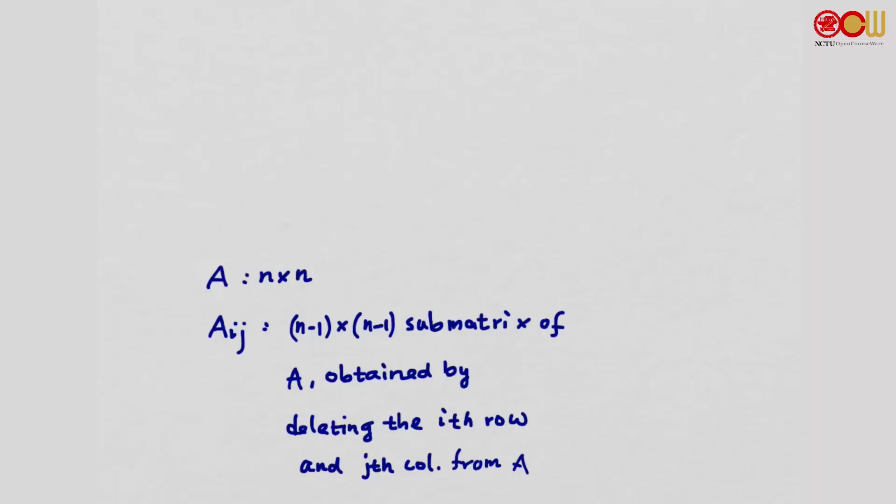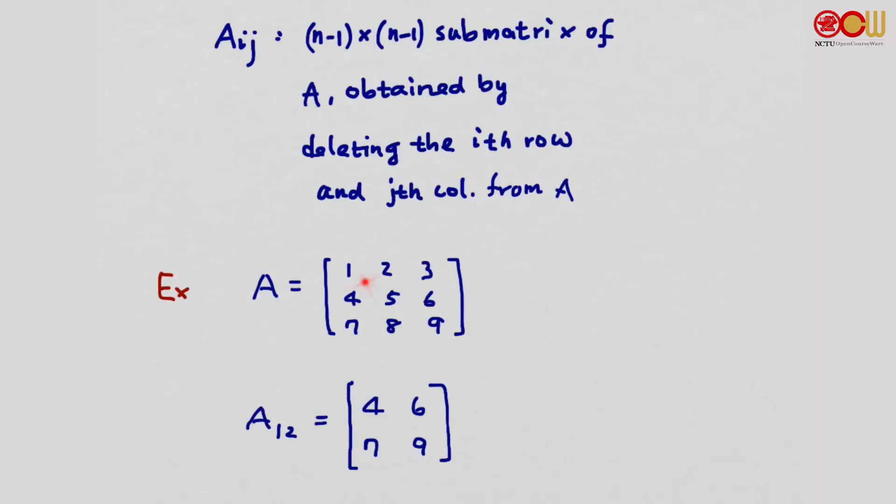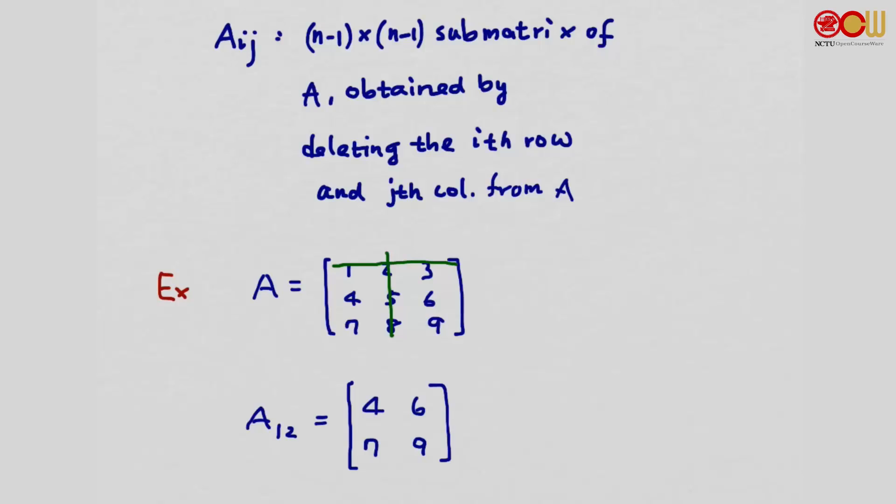For example, consider matrix A with elements 1, 2, 3, 4, 5, 6, 7, 8, 9. The submatrix A12 is obtained by deleting the first row and second column. The remaining submatrix 4, 6, 7, 9 is A12.